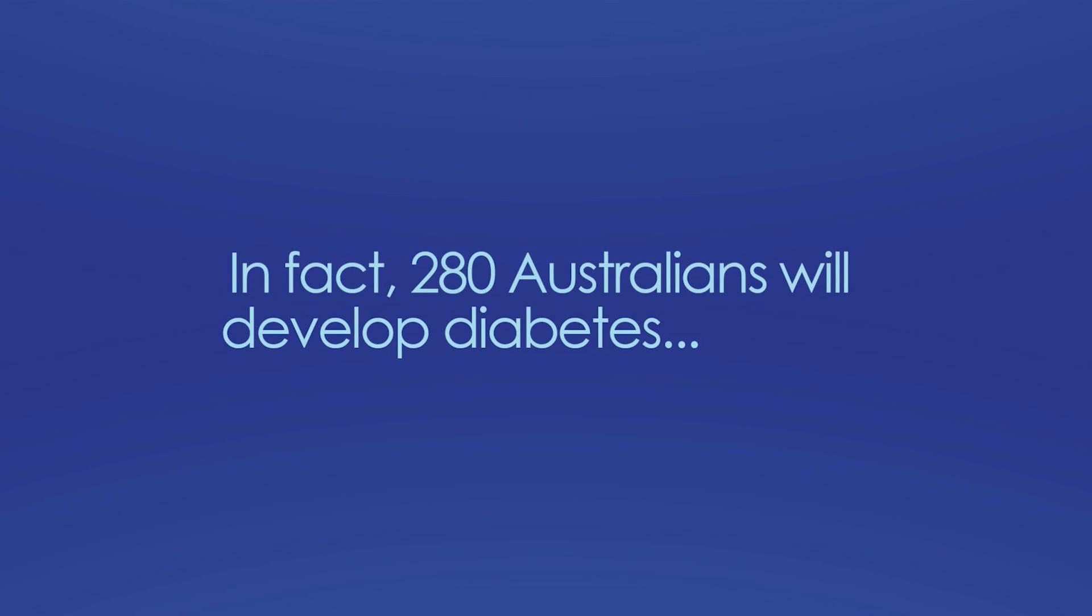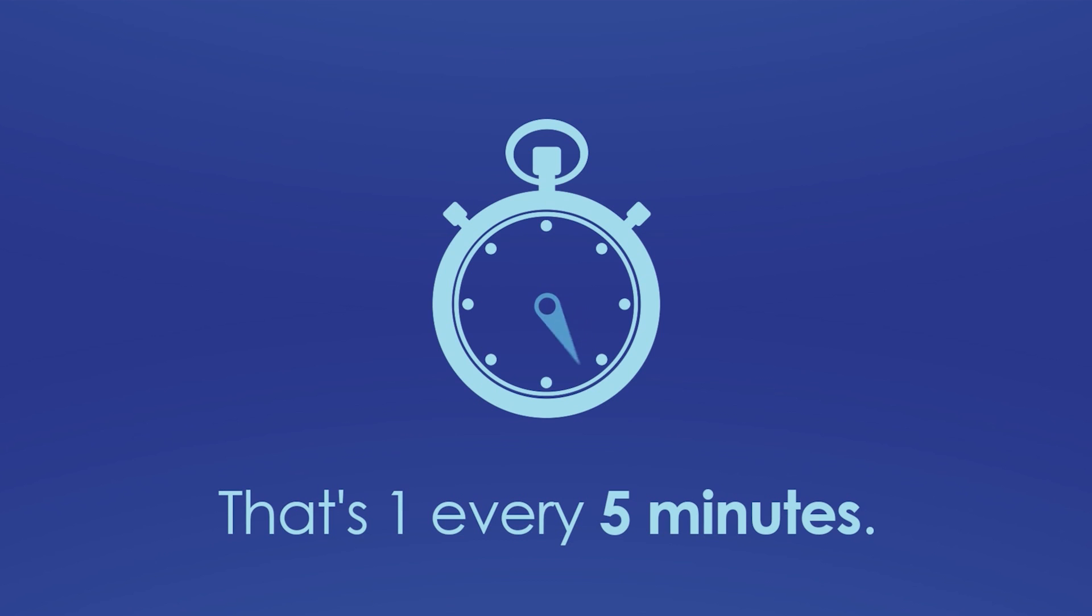Every day, approximately 280 Australians are diagnosed with a form of diabetes. That's one every 5 minutes, making it one of the fastest growing chronic conditions.